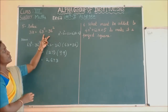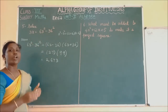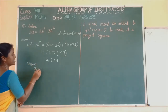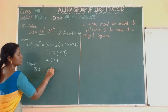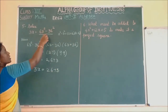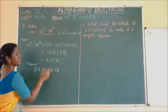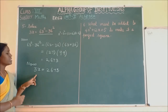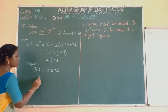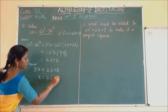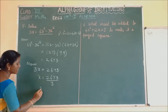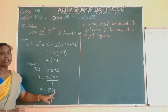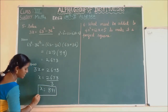We got the value of 63 square minus 36 square as 2673. Now, 3X is equal to 2673. To find X alone, 3 is multiplied with X. If we divide 2673 by 3, we get X equals 891. Finally, the value of X is 891.